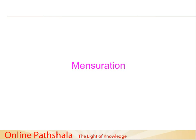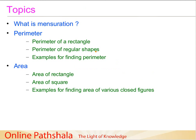Hello and welcome to the new chapter on mensuration. In this chapter we are going to discuss the following topics. First, we start with the basic idea of mensuration — what do we mean by it, what is the scope, and why do we need it. Then we discuss two important concepts: the perimeter of an object, including the perimeter of a rectangle and other regular shapes, deriving rules based on observations.